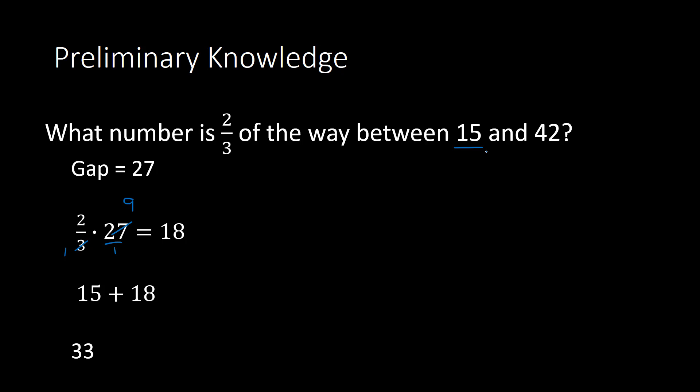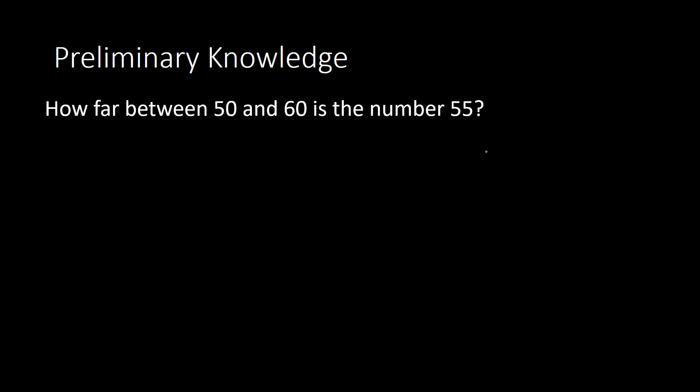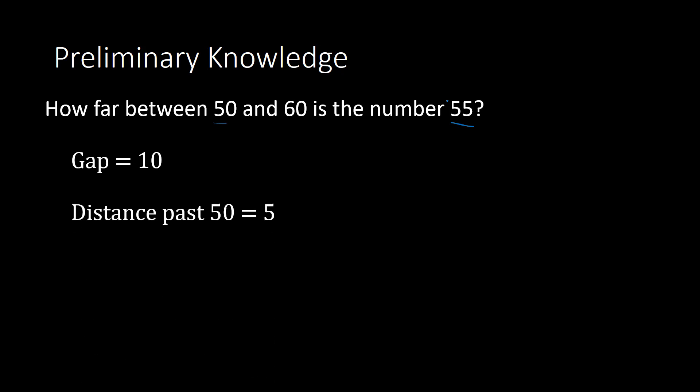That was the first kind of question. The second question is kind of going backwards — it asks how far between two numbers is another number. For example: how far between 50 and 60 is the number 55? I find the gap between 50 and 60: 60 minus 50 equals 10. Then, starting at 50, how far do I have to go to get to 55? I go 5 into the gap. So I take 5 divided by the gap of 10, which gives me one half.